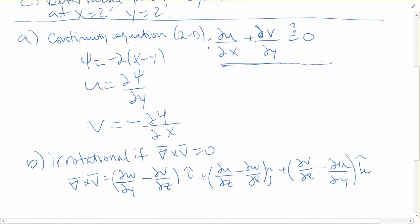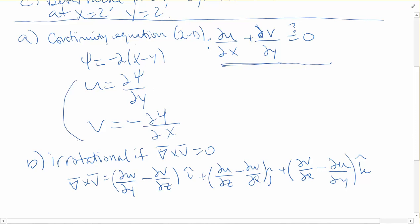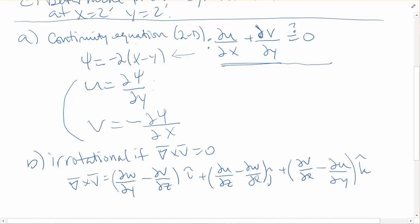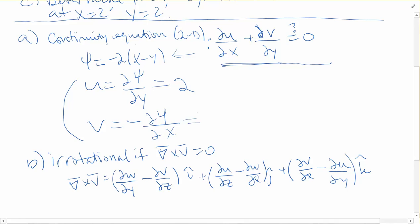We have relationships between u, v, and the stream function. u, the x component of velocity, equals the partial of the stream function with respect to y. Taking the partial of our stream function with respect to y gives us 2. And v, the y component of velocity, is the negative partial of the stream function with respect to x. Taking that derivative gives us negative times negative 2, which is 2.